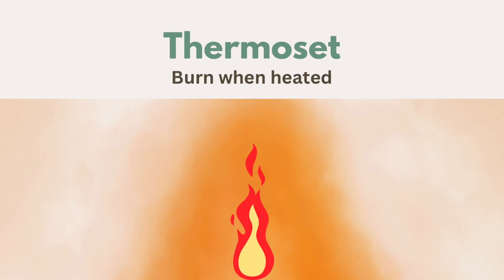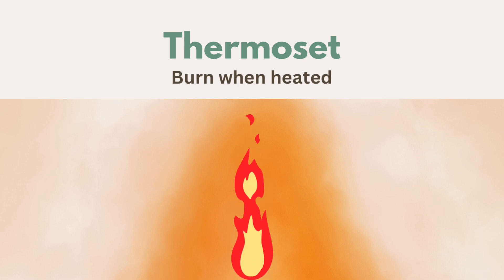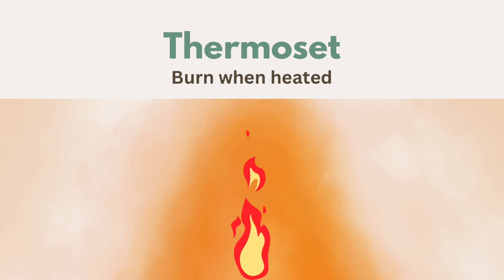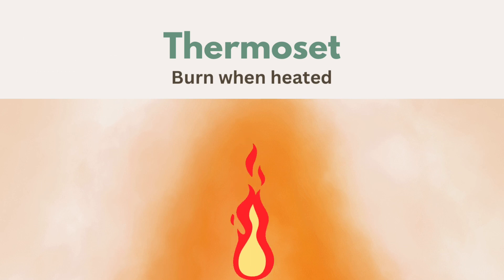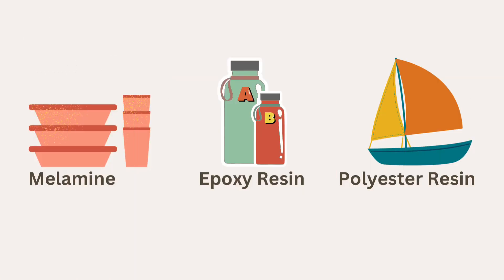Because of the tight rigid polymer net, thermosetting plastics cannot be reshaped using heat. However, this gives them a heat resistance quality, which makes them suitable for electrical parts and pan handles. They are often cast into shapes from a liquid mix which then hardens.